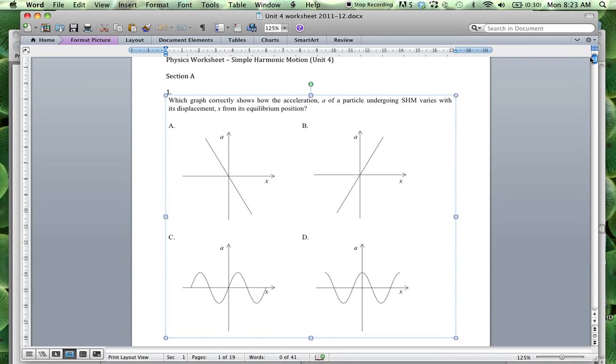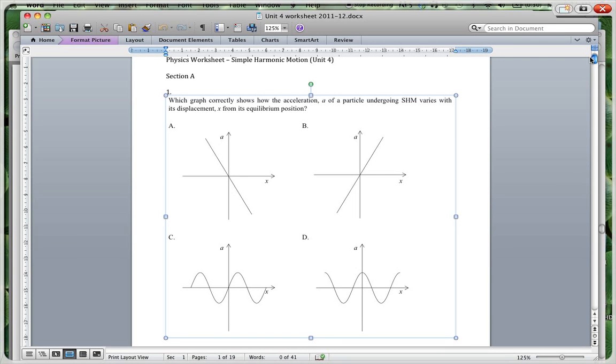Fine, so this is the worksheet for unit 4 and the multiple choice. Now remember when we're doing multiple choice it's always important to look for a principle or an equation that will help you to solve the problem. Also very important to read through the questions very carefully. So which graph correctly shows how the acceleration A of a particle undergoing simple harmonic motion varies with displacement x from its equilibrium position.